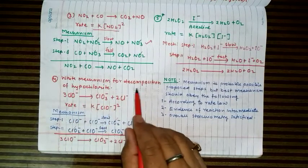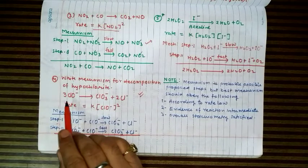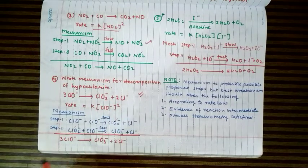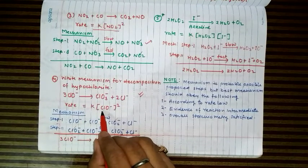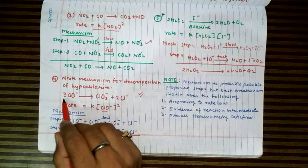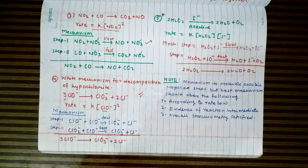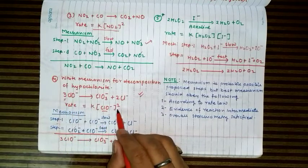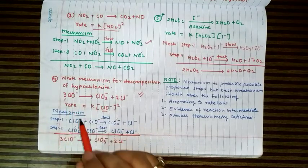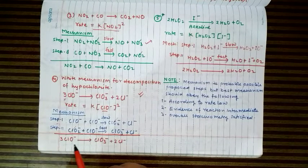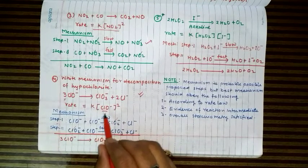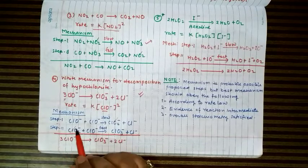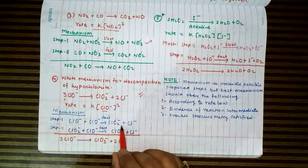Another important reaction: when hypochlorite ion disproportionates, it forms chlorate ion and chloride ion. Here the rate expression shows hypochlorite to the power of two, while three molecules are involved overall. This means three molecules are not colliding in one step — otherwise the power would be three. The reaction occurs in steps. Based on the power in the rate expression, we write the first step using two ClO⁻: ClO⁻ + ClO⁻ → Cl⁻ + ClO2⁻ (intermediate).